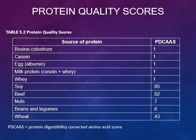The practice of complementary proteins is necessary for people who follow vegan or vegetarian diets. If you're not consuming meat or meat products, it's important to combine different food groups — like a legume such as a bean with a grain like brown rice — to make sure that meal has sufficient amino acids.